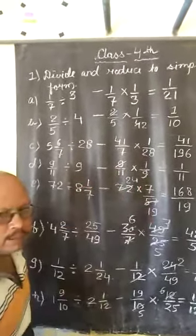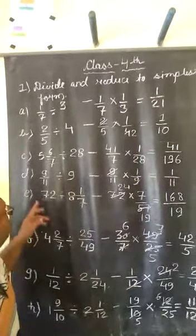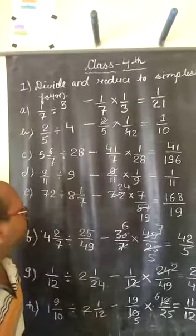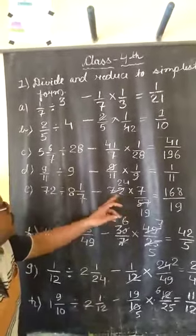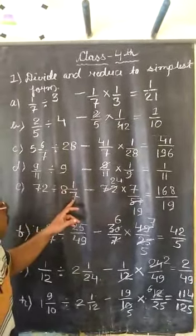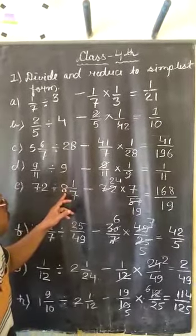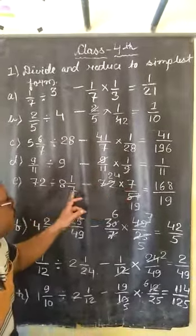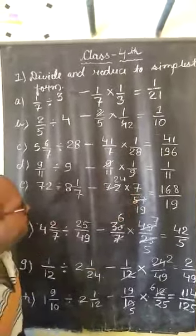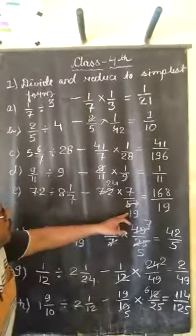Here question 72 divided by 8 whole 1 upon 7. First we make it in proper fraction, 8 times 7 is 56, 57 upon 7. Then we make it reciprocal 7 upon 57, after minimize the number by 3.